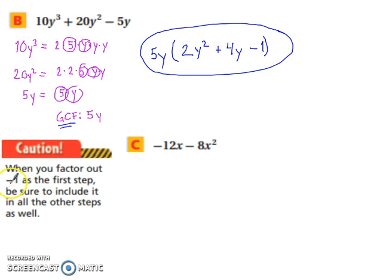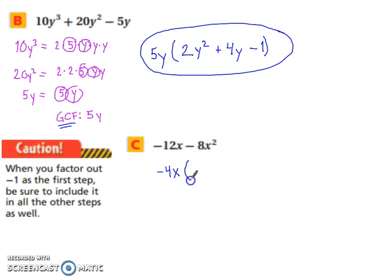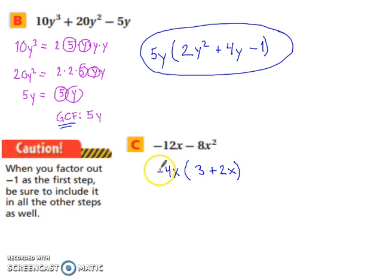Caution: when you factor out negative 1 as the first step, be sure to include it in all the other steps as well. The greatest common factor of negative 12x and negative 8x squared is negative 4x. If you pull out a negative 4x, that leaves you with 3 plus 2x. Notice how the sign didn't stay minus because you took out a negative — that's what it means to include it in all steps. Negative 4x times 3 gives negative 12x, and negative 4x times positive 2x gives negative 8x squared.